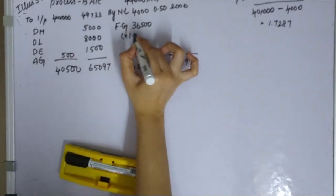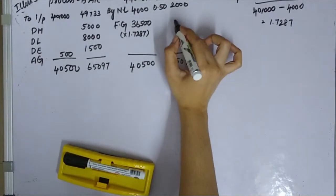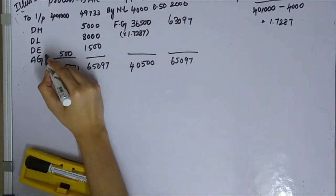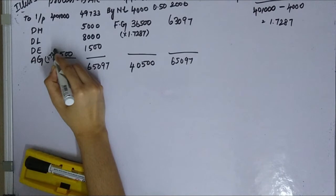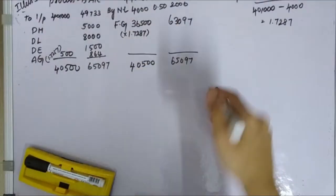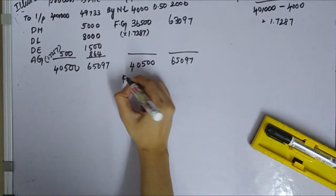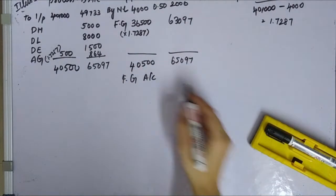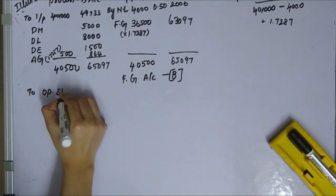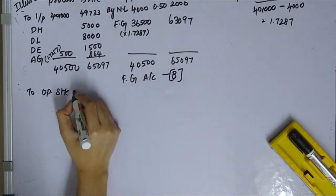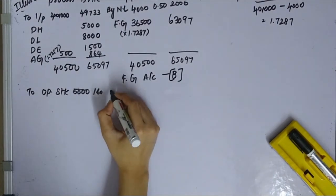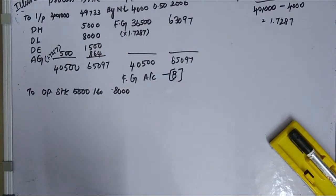Abnormal gain is valued at 1.7287 rupees per unit, giving 864 rupees. Now we prepare the Finished Goods account for Process B. Opening stock on April 1st is 5,000 units at 1.65 rupees, giving a value of 8,000 rupees. Input from Process B is 36,500 units at 1.7287 per unit, giving 63,097 rupees.